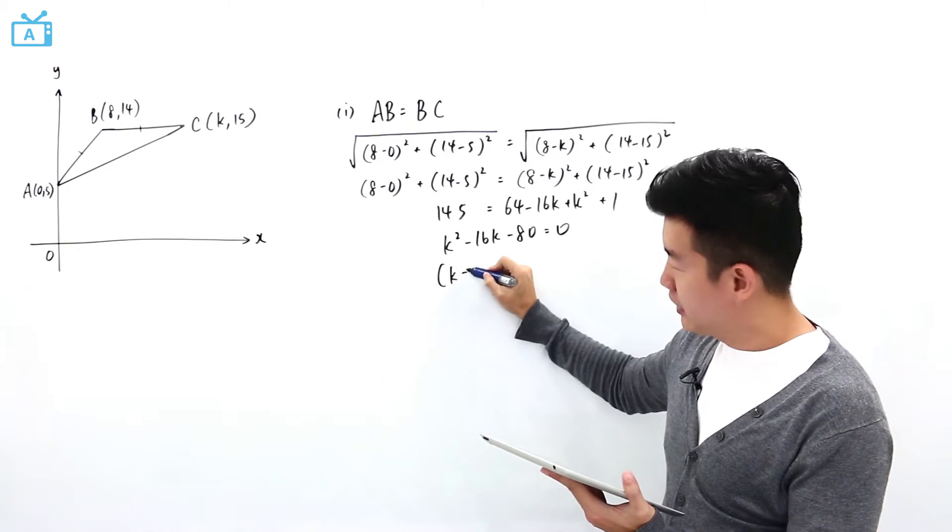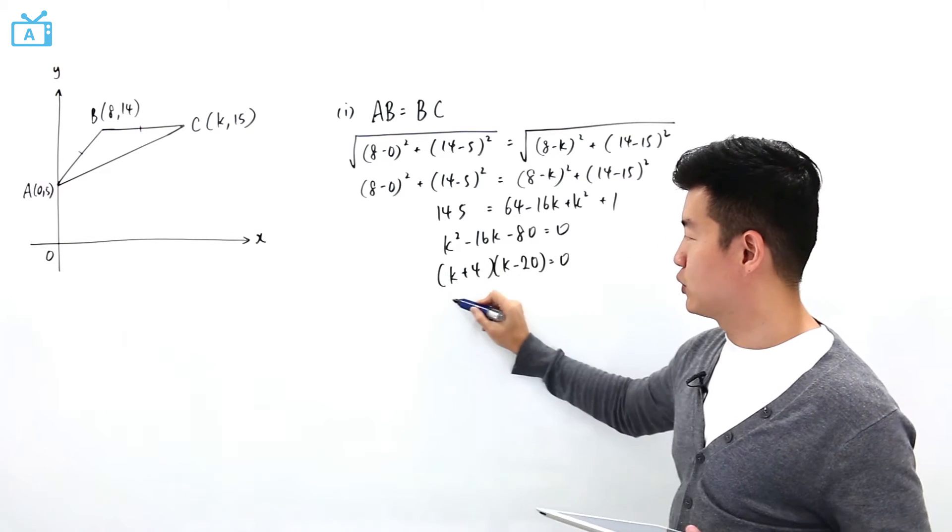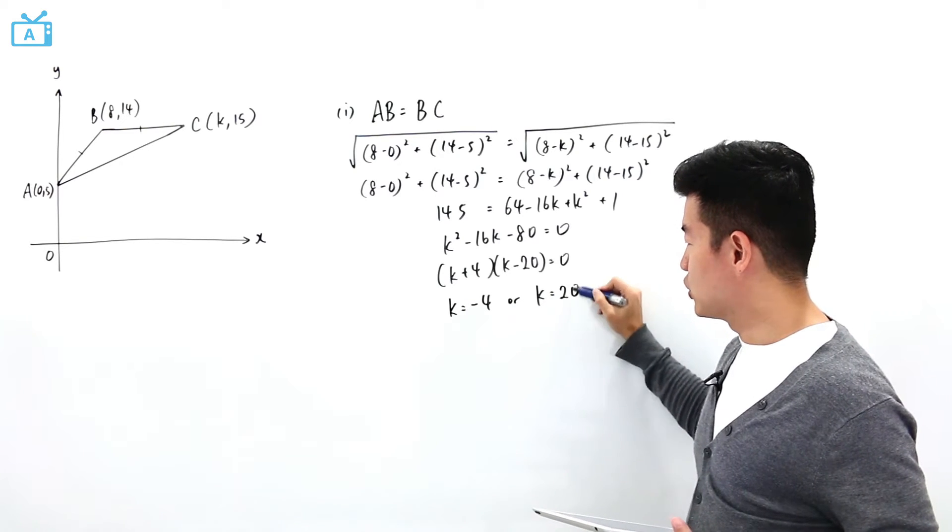Factorizing this: k plus 4 and k minus 20. This is equal to 0. So k is either minus 4 or k is equal to 20.